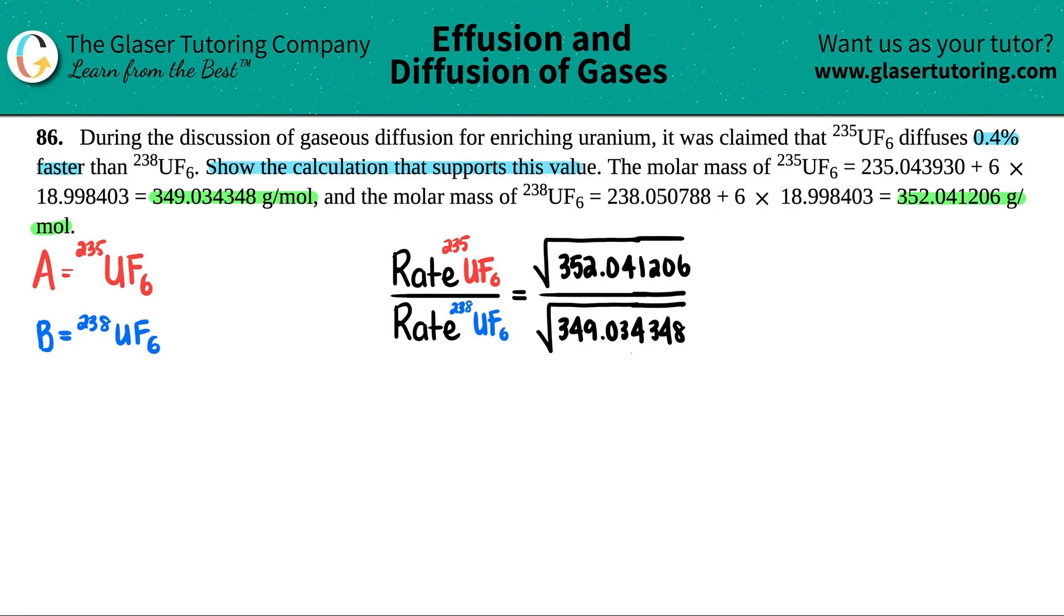So what I'm going to do is I'm just going to say that we have the rate divided by another rate, and then we have the 235UF6, and then on the bottom, it's the 238UF6. And let's just see what this actual number comes out to be if we calculate it. So we have the square root of 352.041206 divided by the square root of 349.034348.